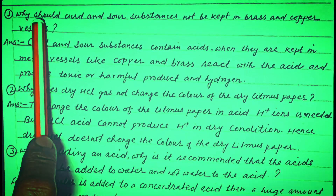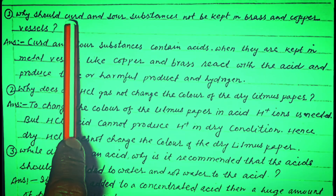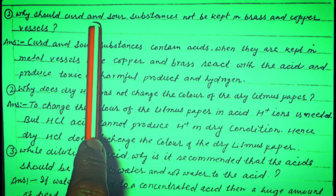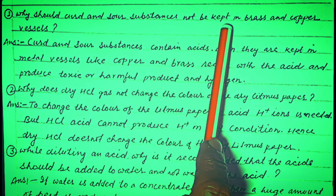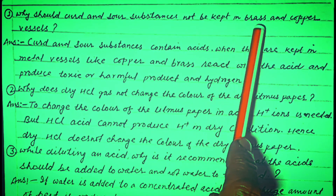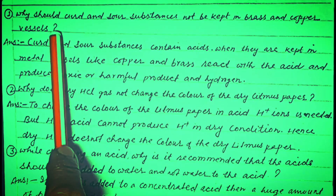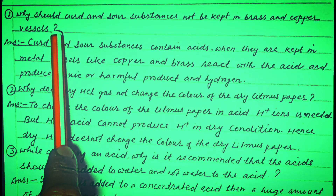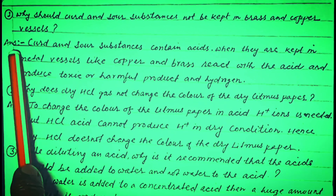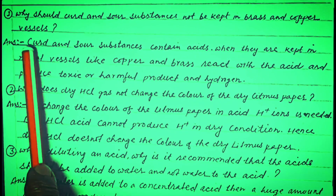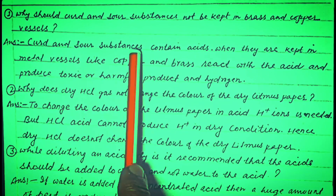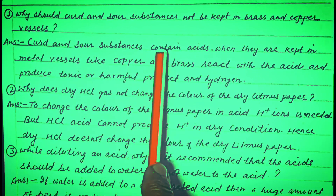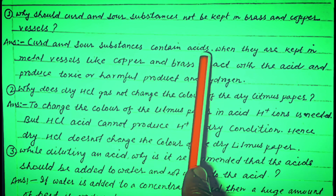Question No. 1: Why should curd and sour substances not be kept in brass and copper vessels? Answer: